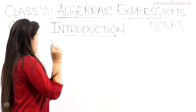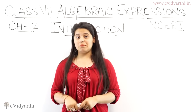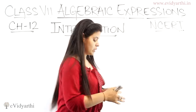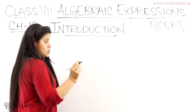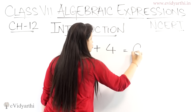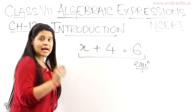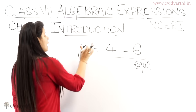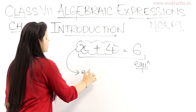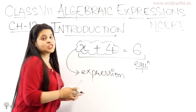As the name suggests, Algebraic Expressions — what are these expressions? We have discussed chapter number 4, which is Simple Equations. We discussed the equation which has an equal-to sign. Like, if we write x plus 4 equals to 6, this is our equation. But if I just take x plus 4, then this x plus 4 is an expression. Expression means a combination of terms.